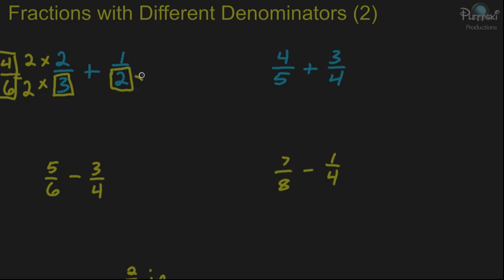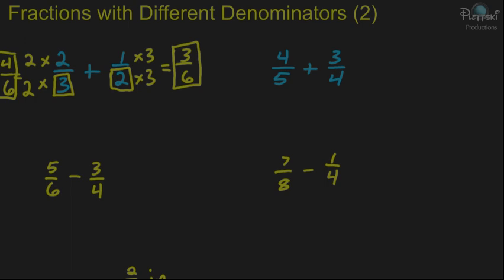Now let's look at the one-half. We have to multiply the 2 by 3 to get to a 6. So you do the same thing to the top, and you're left with 3 over 6. So now we have 4 over 6 and 3 over 6.